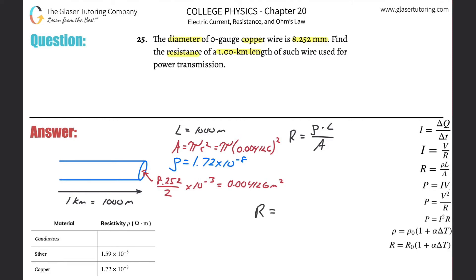Right, so let's just plug it in. So resistance is equal to the resistivity of 1.72 times 10 to the minus 8 multiplied by the length, which was 1000 meters, all divided by the cross-sectional area, π times 0.004126 squared. And what do we get? Let's see. All right, so 1.72 times 10 to the minus 8 multiplied by 1000 divided by π times 0.004126 squared.